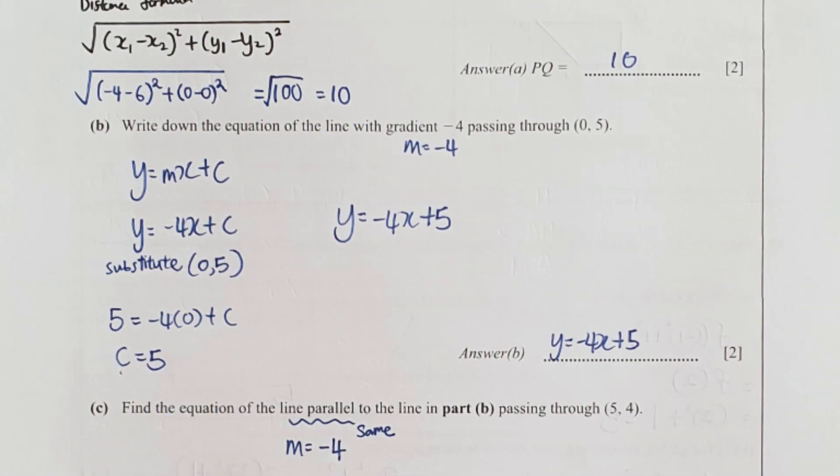Write down the equation with a gradient of negative 4 passing through (0, 5). First I use the universal formula y equals mx plus c. Fill up the m with negative 4, substitute (0, 5) into it and I get my c as 5. So your final equation is y equals negative 4x plus 5.